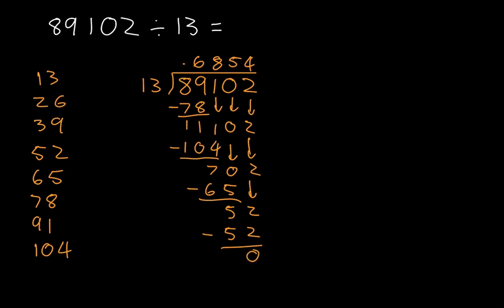Now we're left with 0, and because we're left with 0, we know that this doesn't have a remainder, so this is simply our final answer. 89,102 divided by 13 is equal to 6,854.